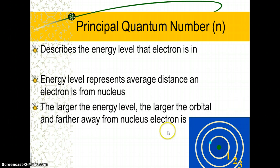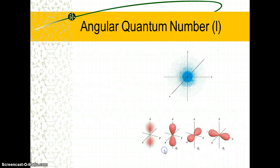The larger the energy level, the larger the orbital is, and the farther away from the nucleus the electron is on average. That's the principal quantum number. If an electron has a principal quantum number of 2, it's in the second energy level. But I need more information to narrow it down, because there are several electrons in the second energy level.